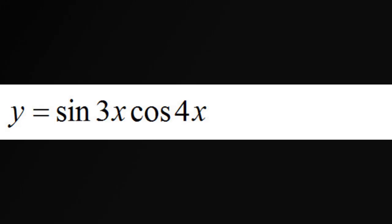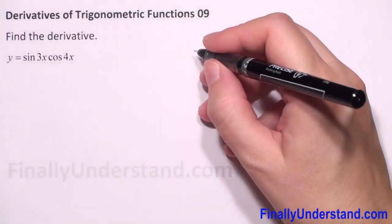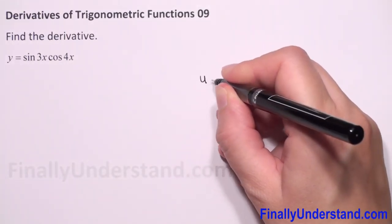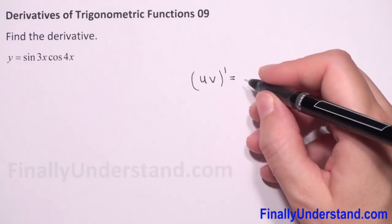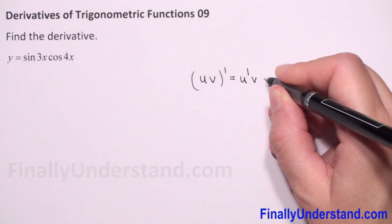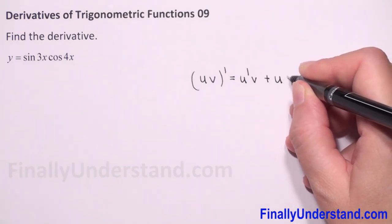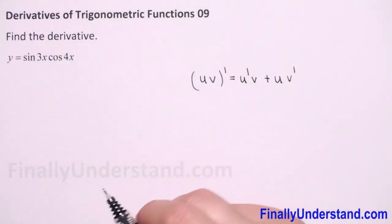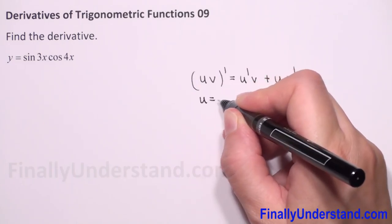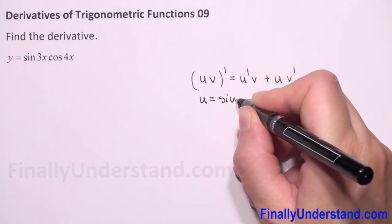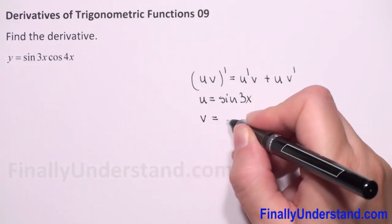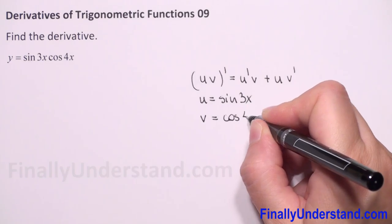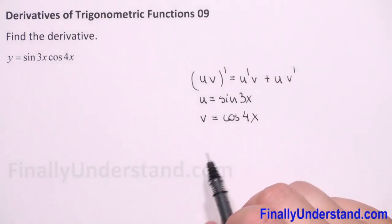Because we have multiplication here, we have to use the product rule. The formula is: (u·v)' = u'·v + u·v'. In our case, u is equal to sine of 3x and v is equal to cosine of 4x.